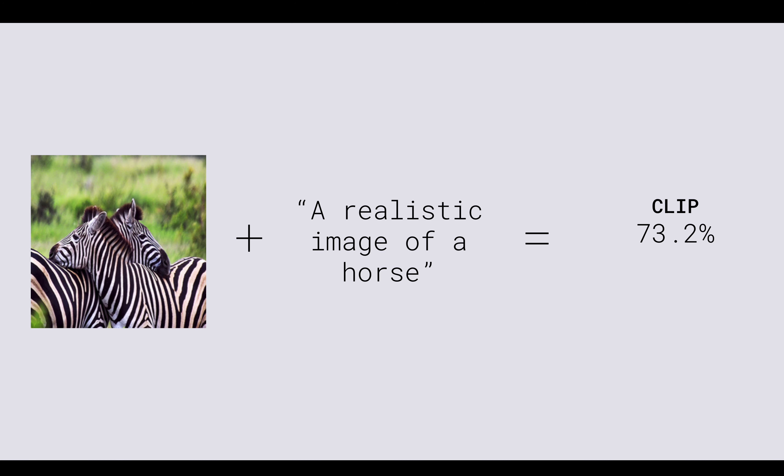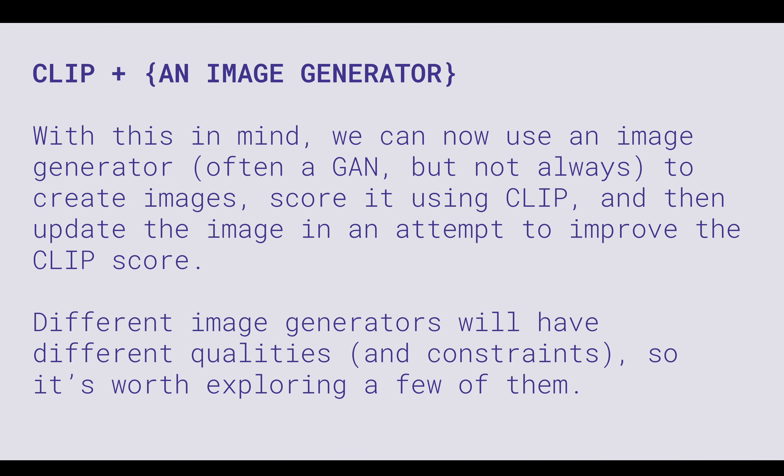Here's a basic concept of how CLIP works: you provide a caption — say, an image of a horse — and then provide an image of two zebras. CLIP gives a score, like C-minus or B-plus, saying the likelihood of these two matching is some percentage. We don't use CLIP just by itself; when we actually generate images we use CLIP plus an image generator, so it's often CLIP plus VQGAN or CLIP plus diffusion models.